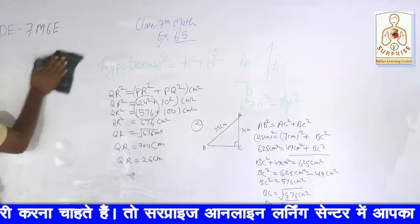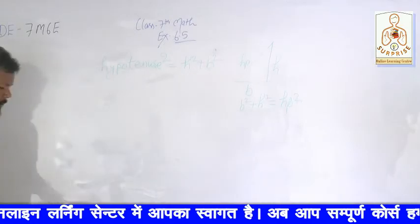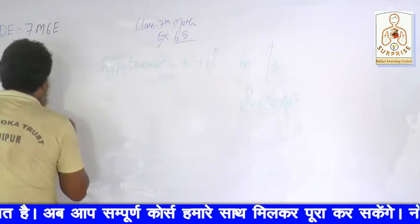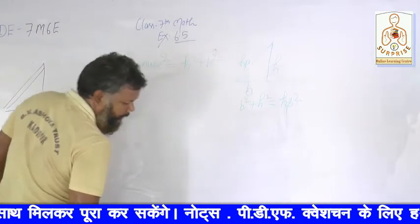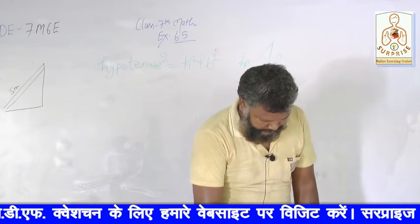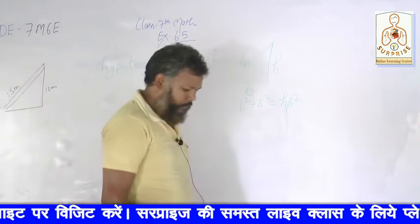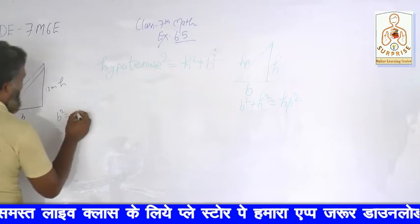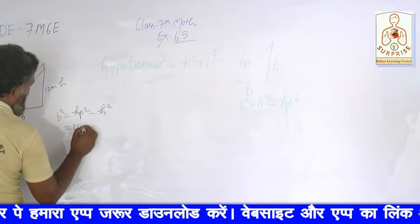Ab question number 3 ki charcha karte hain. Yeh saari cheezein basically isi mein chalti rahegi. Question number 3 mein: ek seedi lagi hui hai jo 15 meter hai aur 12 meter hai. Iska kuch naam diya gaya hai — HP ho gaya. This is the height. We will take base square equal to HP square minus height square.